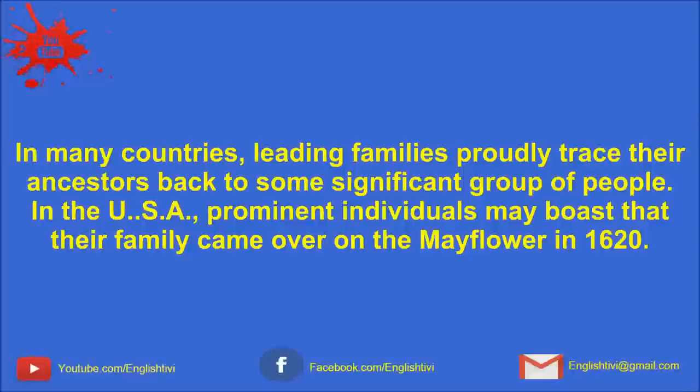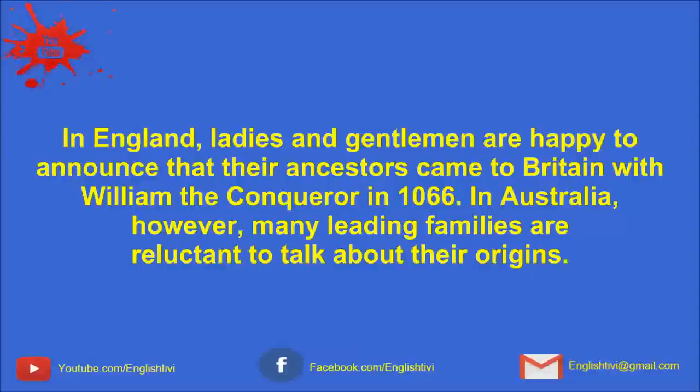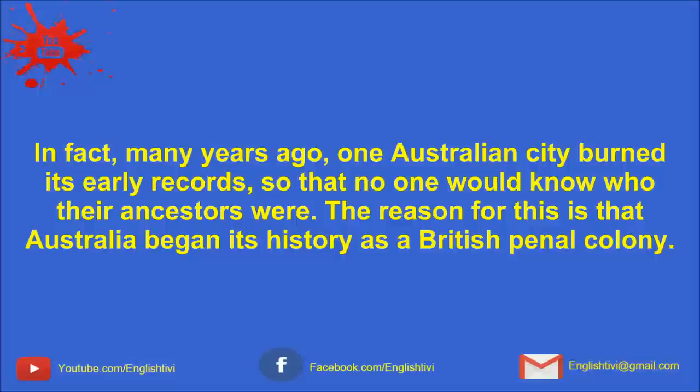In many countries, leading families proudly trace their ancestors back to some significant group of people. In the USA, prominent families may boast that their family came over on the Mayflower in 1620. In England, ladies and gentlemen are happy to announce that their ancestors came to Britain with William the Conqueror in 1066. In Australia, however, many leading families are reluctant to talk about their origins. In fact, many years ago, one Australian city burned its early records so that no one would know who their ancestors were.